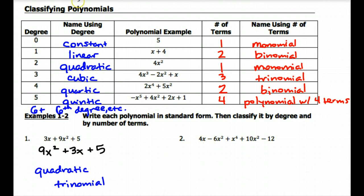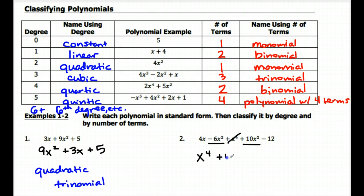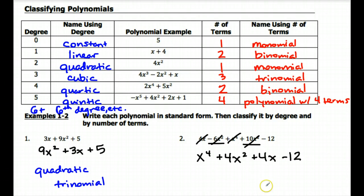For number two, we start with our highest exponent — that term is x to the fourth. Then we have two terms with x squared: a negative six x squared and a ten x squared. Combining those gives a positive four x squared. The next term is a four x, so plus four x. And then our constant goes last, minus twelve. When writing in standard form, make sure you're simplifying and combining like terms whenever possible. This is a degree four, so we call that a quartic, and it's a polynomial with four terms.